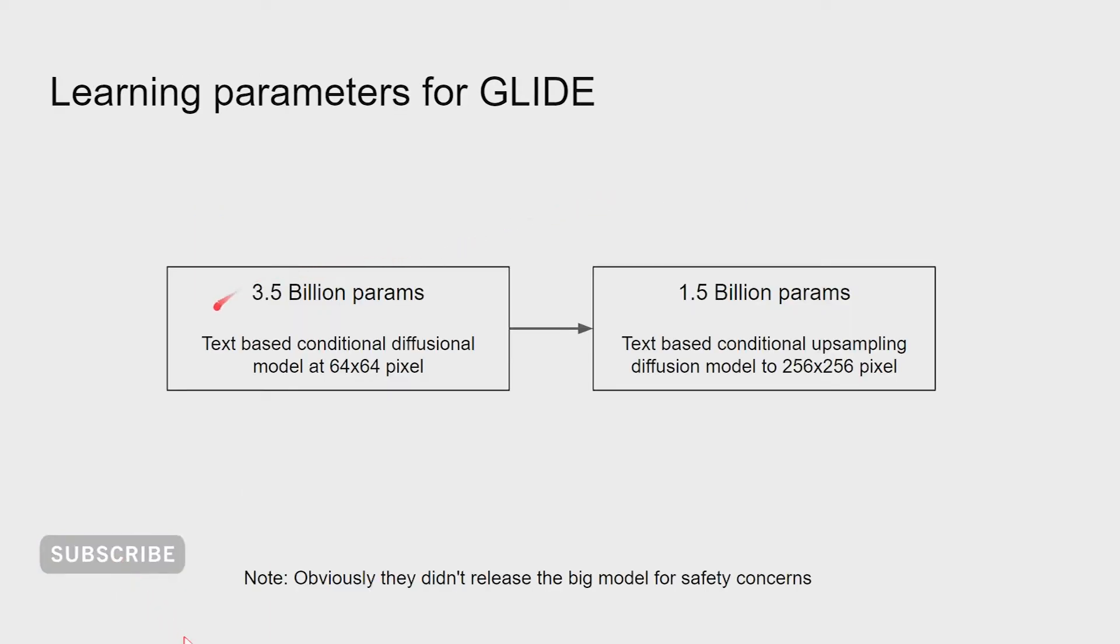GLIDE is trained with about 3.5 billion parameters for text-based guided diffusion model, which generates images of 64 by 64 pixels, followed by a 1.5 billion parameter model for text-based conditional upsampling diffusion model to 256 by 256 pixel images. However, they didn't release the big model for safety concerns.